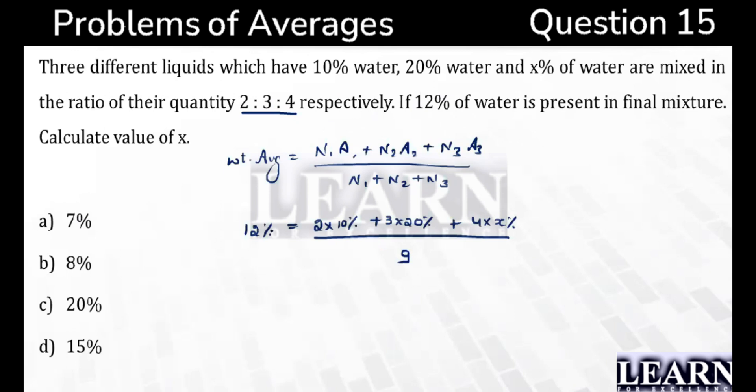Since you have got the values in terms of a percentage everywhere and you have got it on the right hand side as the left hand side, you can just eliminate those percentages. You can directly take it as a normal number. So I can say that 9 into 12 equals 2 into 10, which is 20 plus 60 plus 4X.